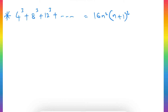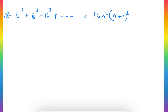The question is: show that 4³ + 8³ + 12³ + ... up to n terms equals 16n²(n+1)². In this question the nth term is not mentioned. If the nth term were given it would be very easy to find the solution, but here our first duty is to find the nth term, which is hidden in the question.